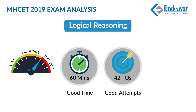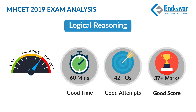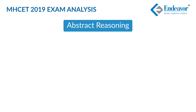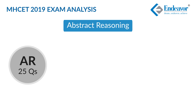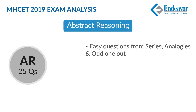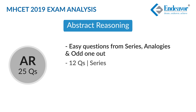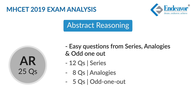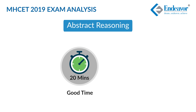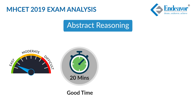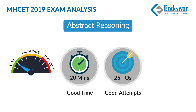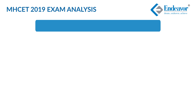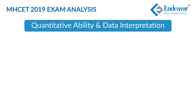The next section is Abstract Reasoning or Visual Reasoning. This section had easy questions from the same topics of series, analogies, and odd-one-out. 12 questions were from series and 8 were from analogies, while the rest 5 questions were on odd-one-out type. A prepared student could easily get above 20 in 25 minutes. The ideal time for this section is about 20 minutes, level of difficulty is easy, ideal attempts are 25, and an ideal score of 20+.